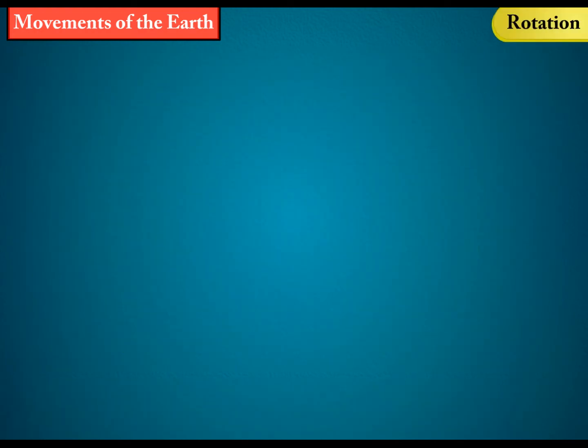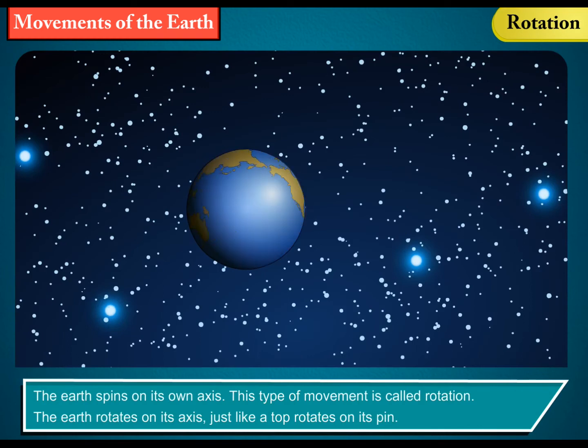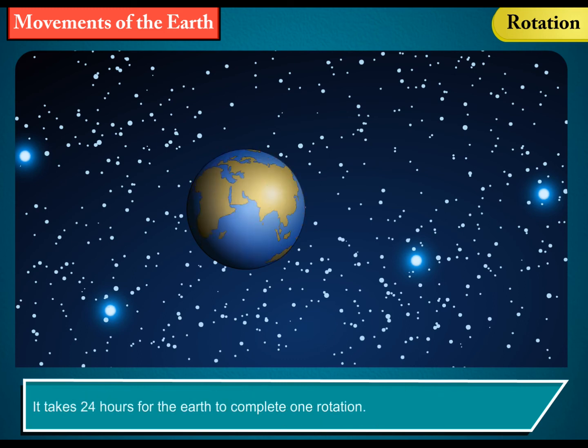Rotation: The Earth spins on its own axis. This type of movement is called rotation. The Earth rotates on its axis just like a top rotates on its pin. It takes 24 hours for the Earth to complete one rotation.